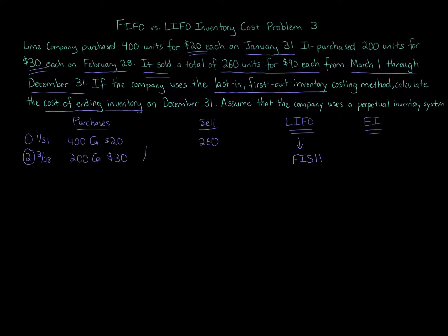Take those 260 units and they first come from the bottom. Do we have enough in the second layer to cover the 260? No, we take all 200 units and we've just eliminated those units. They've now been used. So we take all 200 at $30.